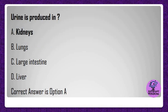Urine is produced in? A) Kidneys, B) Lungs, C) Large intestine, D) Liver. Correct answer is option A.